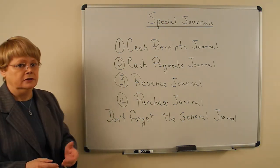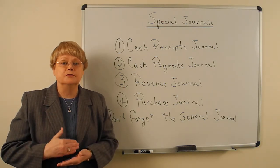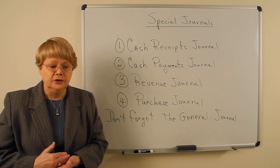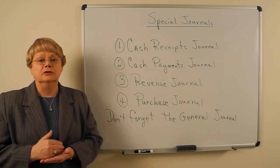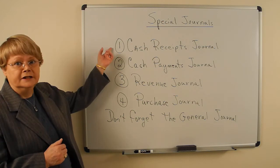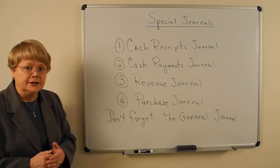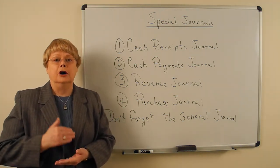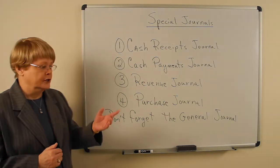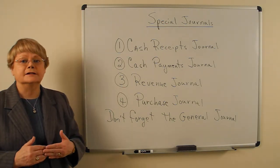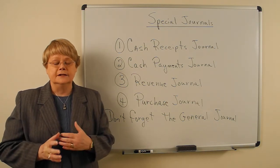The revenue journal has your revenue in it, except it only has revenue on account — where you debit accounts receivable and credit some type of revenue account. That's the only type of revenue that goes through the revenue journal. If it is cash revenue, it goes through the cash receipts journal. The purchases journal only includes purchases on account, where you generate a credit to accounts payable.